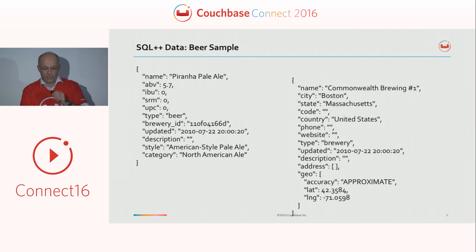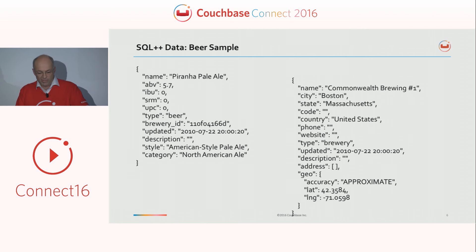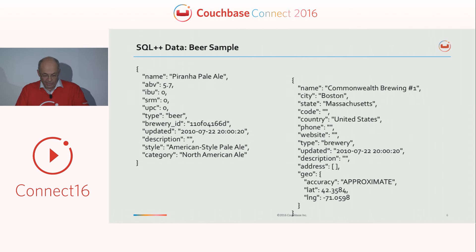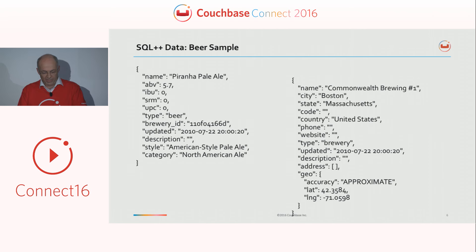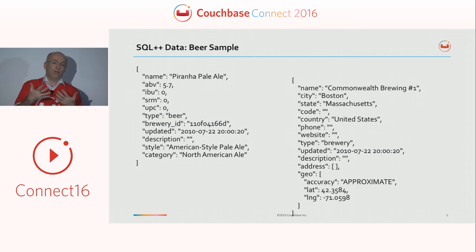Let's start with a very simple example. As with the previous talk, we also use the beer sample, because we're at Couchbase. In the beer bucket we have two kinds of documents: beer documents and brewery documents. The beer document has a name, alcohol by volume percentage, other numbers, type 'beer', an ID for the brewery that makes it, and metadata with description and style. For breweries, you know where they are, what they're called, where they're from, and a phone number.